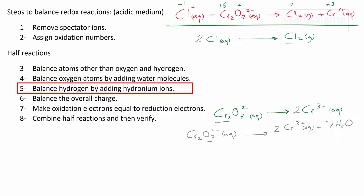Step five is how to balance hydrogen atoms. Please listen carefully for this step, since it's the step where most students make mistakes. To balance hydrogen atoms, I should add hydronium ions on the other side. In the first half reaction, we don't have hydrogen. In the second, we have 14 hydrogens to the right side, so I should add 14 hydronium ions on the left side. But if I add 14 hydronium ions, then I added more oxygen atoms. To balance that, I should add the same number of hydronium ions I added to the water molecules on the other side. So here I added 14 hydronium, the same number should be added to the water molecules. So I have seven plus 14, giving 21 water molecules on the right side.